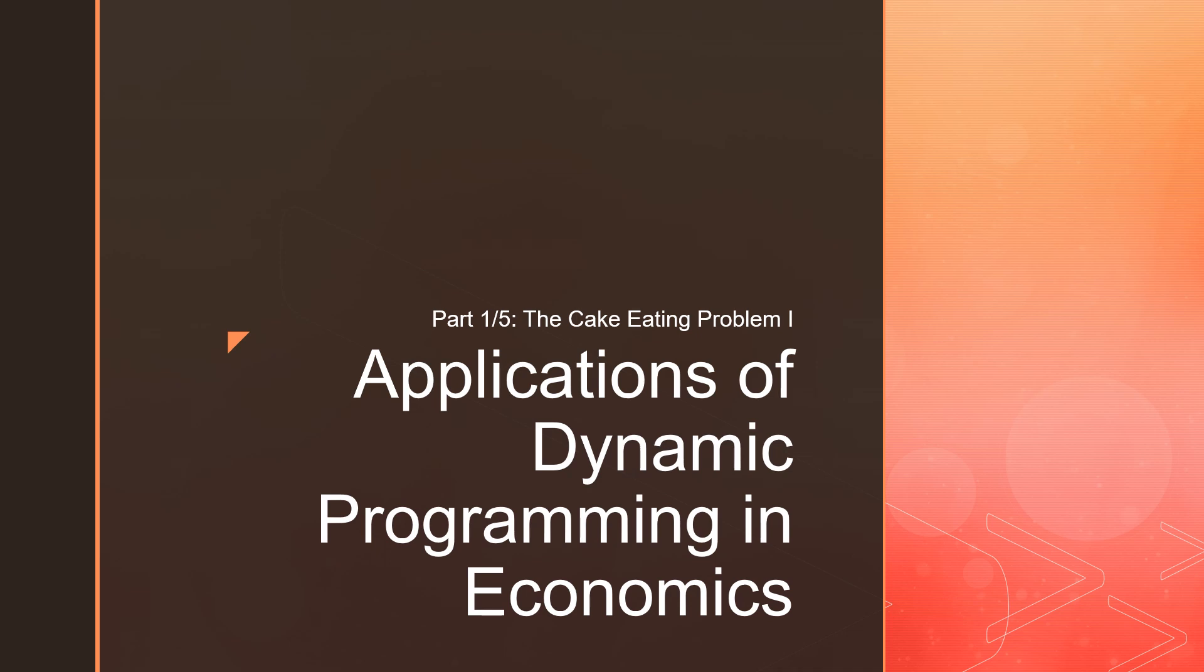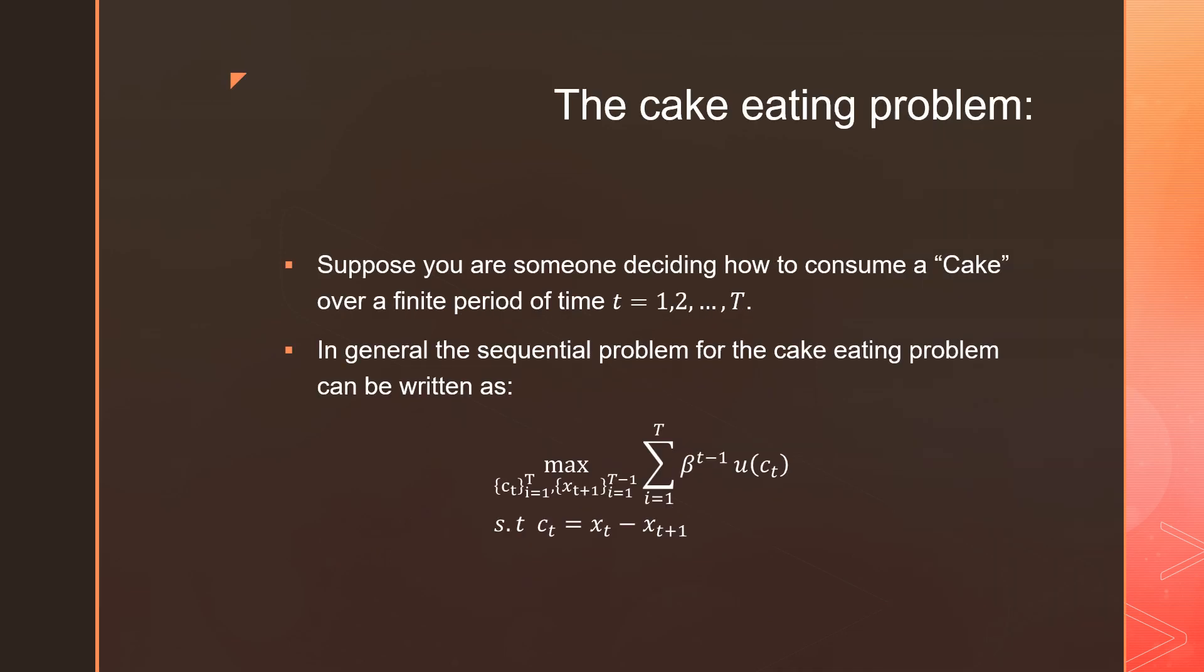In this video we're going to talk about the cake-eating problem over a finite horizon. Suppose you are someone deciding how to consume a cake over a finite time period where T goes from period 1 to terminal period T. In general, the sequential problem for the cake eating problem can be written as maximizing the series of discounted utilities from consumption.